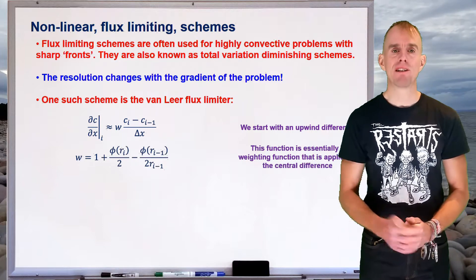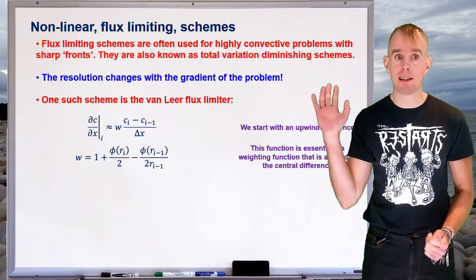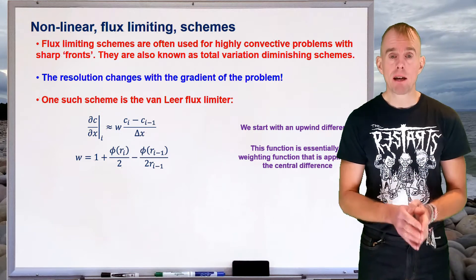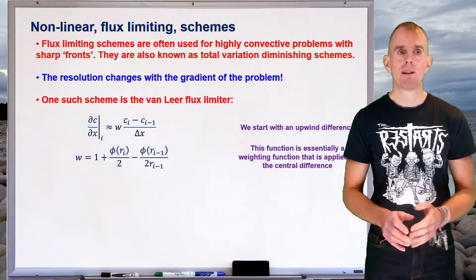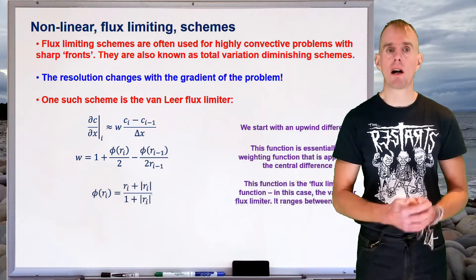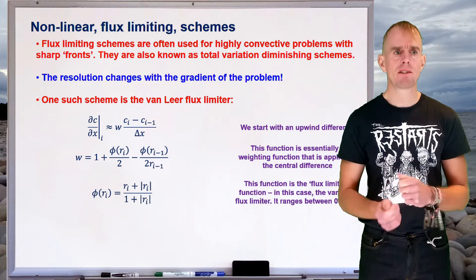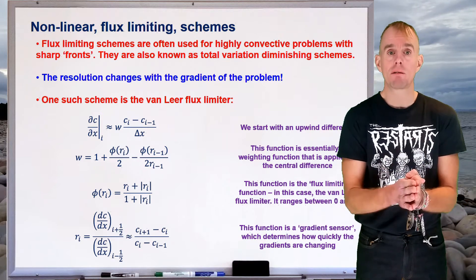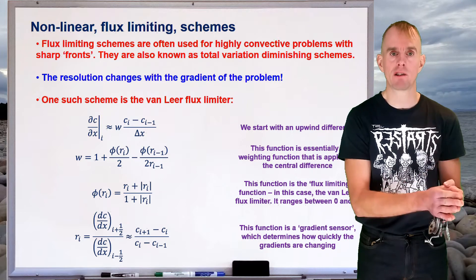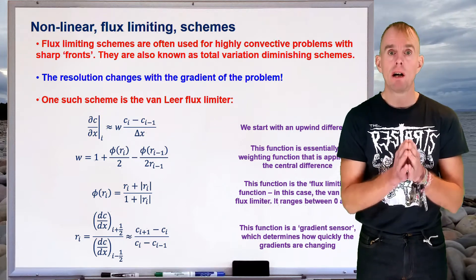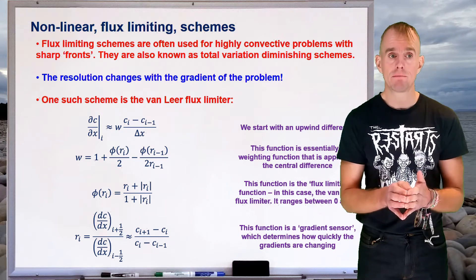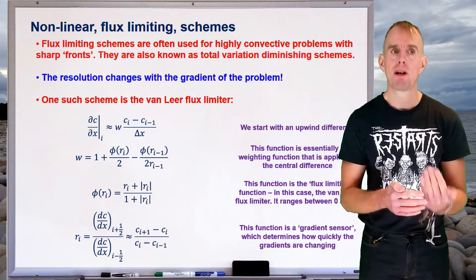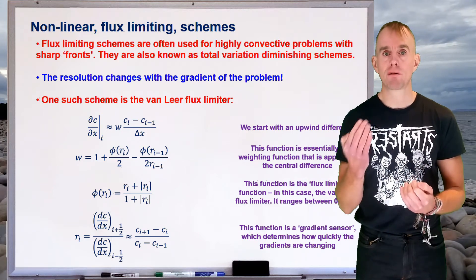The weighting factor can be written in terms of a sum of the function phi. Phi here is our flux limiter. We'll see that our flux limiter is evaluated both at node i and at its upwind counterpart, node i-1. Our flux limiter phi is evaluated in terms of something called r, which is called a gradient sensor. Our gradient sensor is written as the ratio of two gradients — a gradient taken at a half point downwind at i plus a half, and a half point upwind at i minus a half. So we've got our gradient sensor, which determines the value of the flux limiter, which determines the weighting function, which governs how the discretization for the gradient is made.